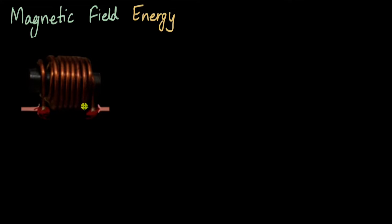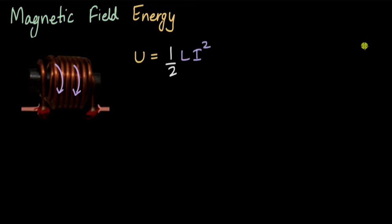To keep the math simple, let's start with a familiar setup: a charged inductor with a current I flowing through it. We can ask what is the energy stored in this inductor. We've actually derived that expression already — the energy stored in the inductor is half times the self-inductance L times I squared.